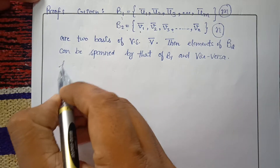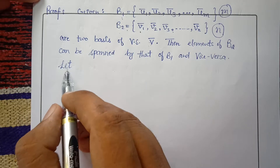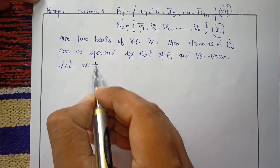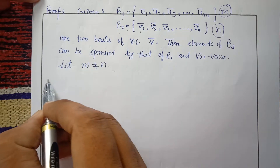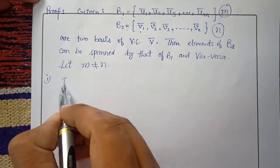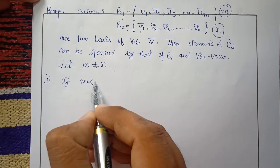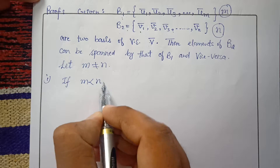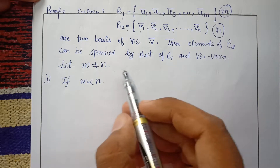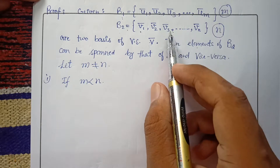We are going to prove this theorem using the contradiction method. We assume that m is not equal to n, specifically taking the case where m is less than n. We will now express the elements of B2 as linear combinations of elements of B1.